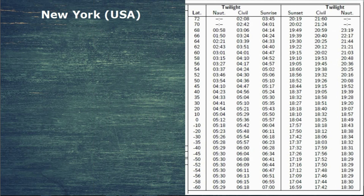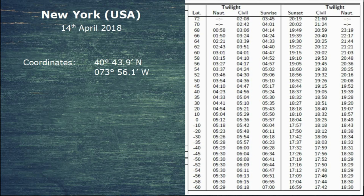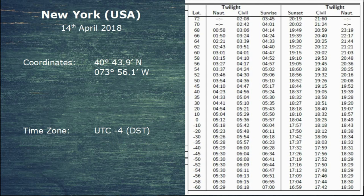For our example we're going to be looking at New York, USA, on the 14th of April 2018. The 14th falls within the date range on these pages, so this is the table we'll use. The coordinates of New York are 40° 43.9' North and 073° 56.1' West. The time zone in New York is UTC minus 5, but they operate daylight saving time bringing them to UTC minus 4 in the summer. Given the date of April 14th, we'll use UTC minus 4. All you need is your coordinates and time zone — the time zone is just to convert into local time, though you can leave it in UTC if you prefer.